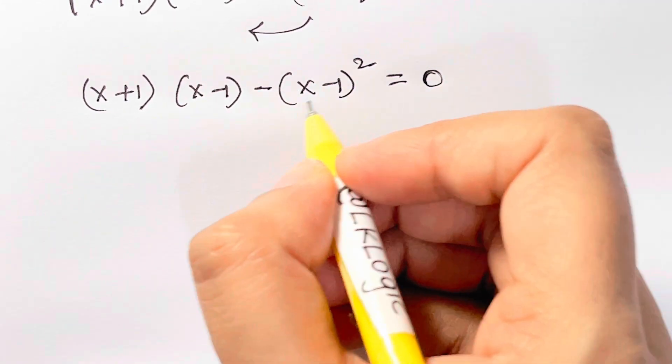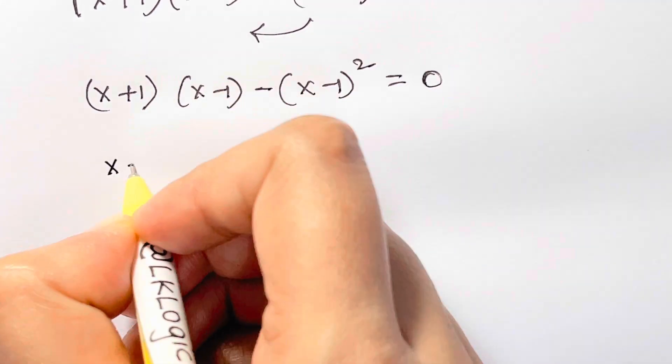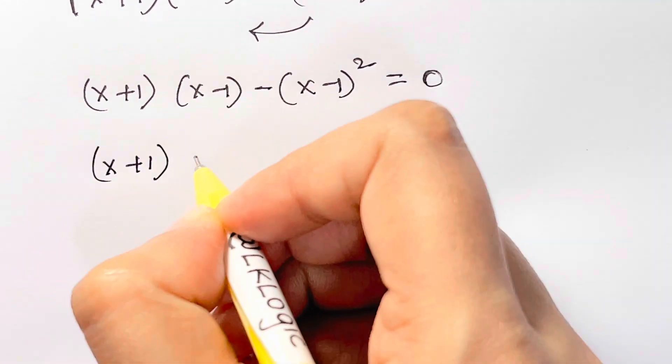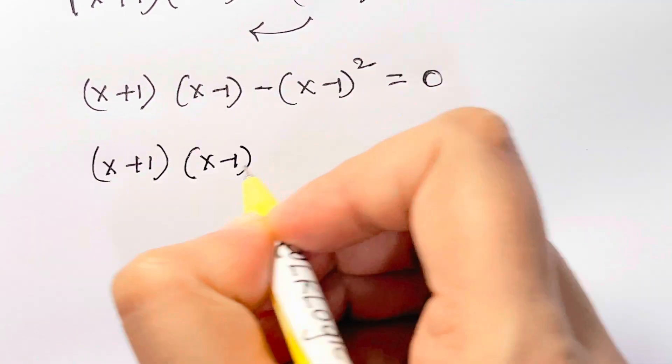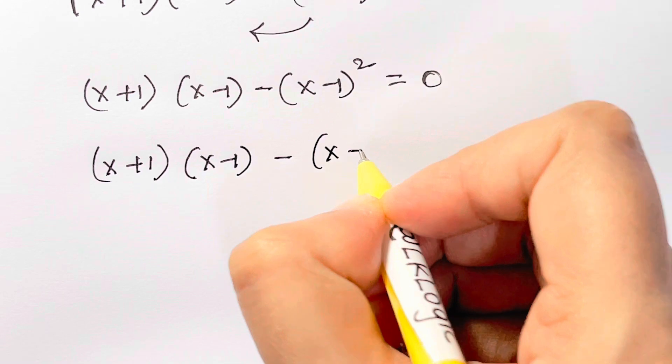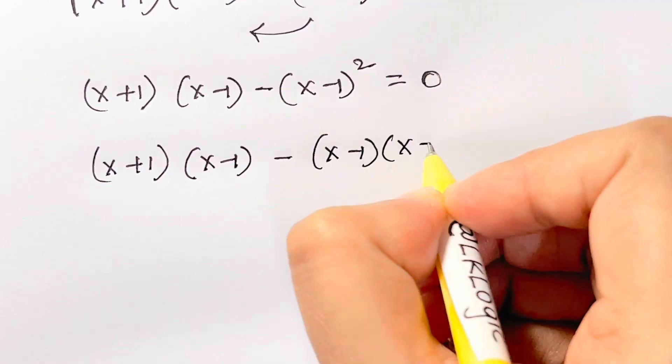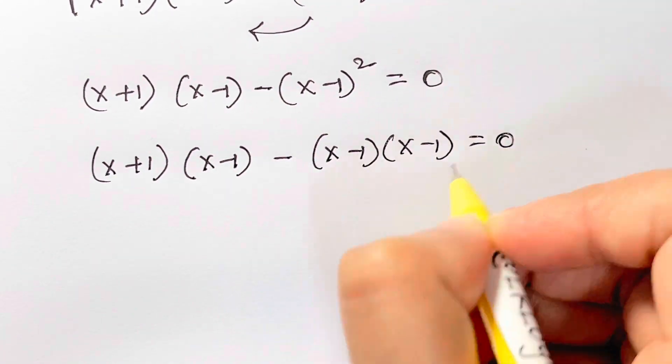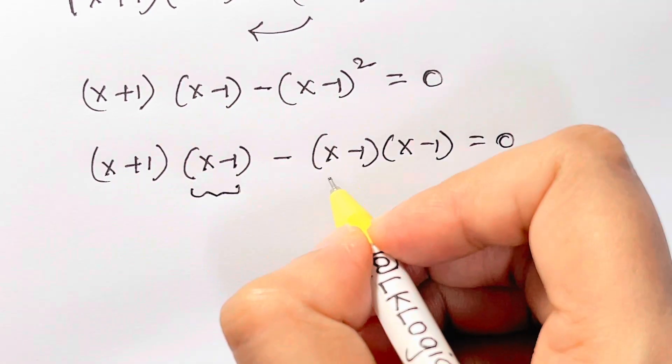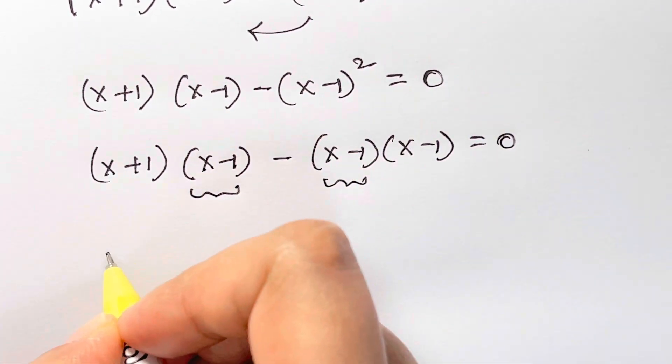Now I have x minus 1 the whole squared. So let me expand that. x plus 1 times x minus 1 minus, I can write it as x minus 1 times x minus 1 is equal to 0. Now I have x minus 1 here, I have x minus 1 here. Let me take it out common.